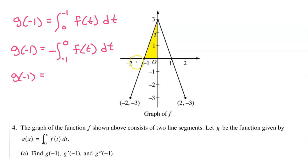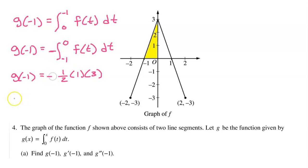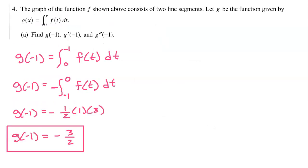The area of a triangle is one-half base times height. So this area will be one-half times base one times height three — but don't forget the negative sign. This simplifies to negative three over two. So that's one down and two to go.